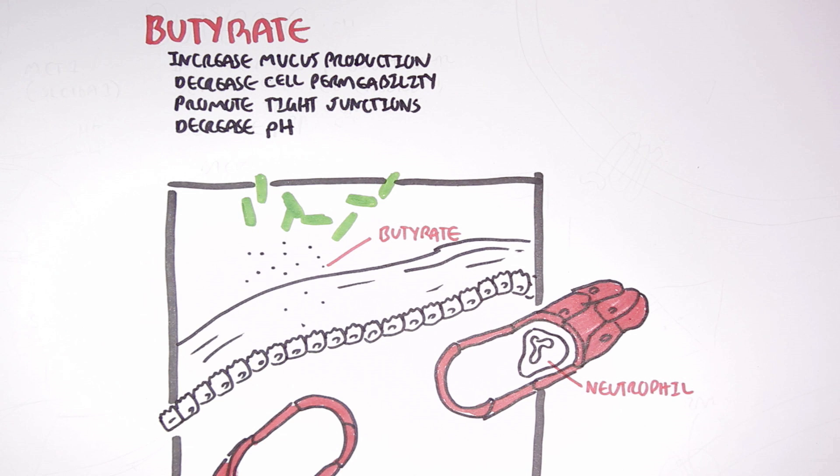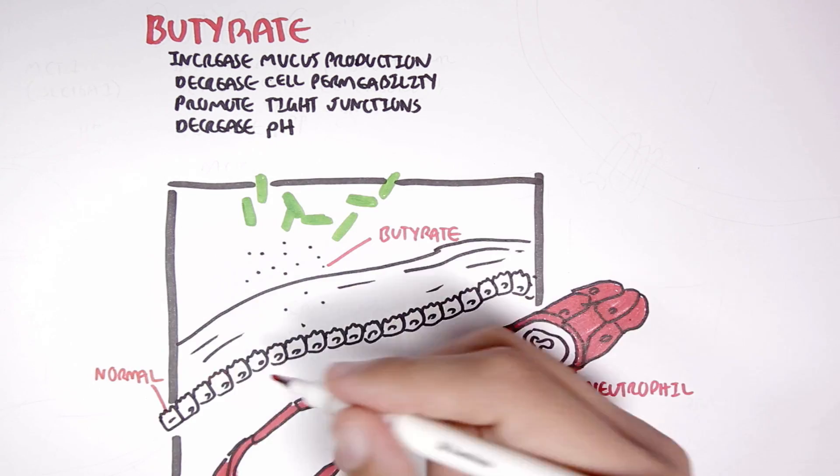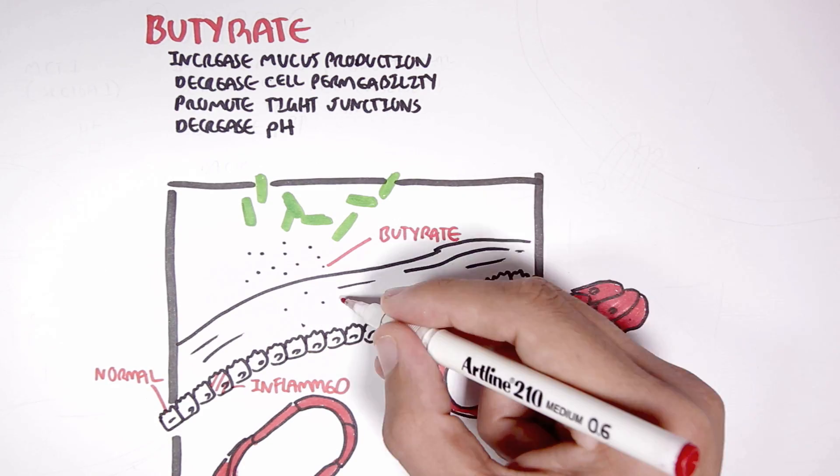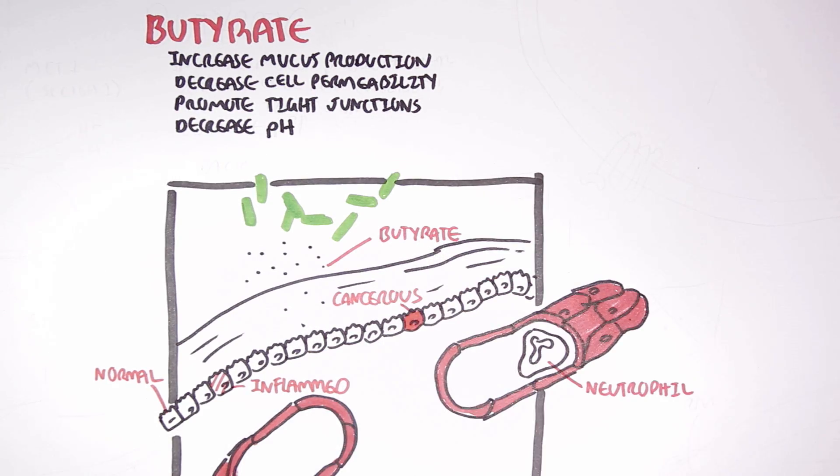These effects all improve the colonic defense barrier, leading to enhanced protection against luminal antigens. Of course, butyrate does more than this according to literature. We will focus now in more detail on the effects butyrate have on four specific types of cells: a normal colon cell, an inflamed colon cell, a cancerous colon cell, and the neutrophil.